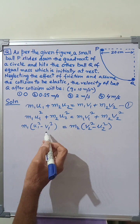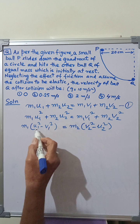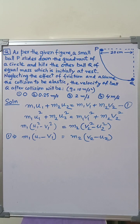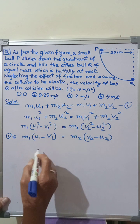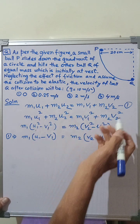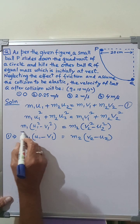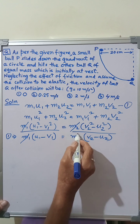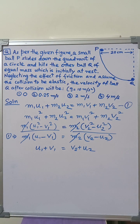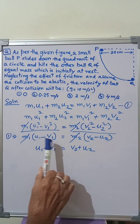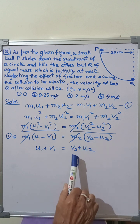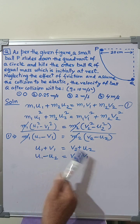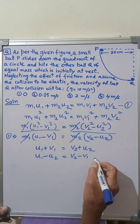From the kinetic energy equation, we get M1·(U1² − V1²) = M2·(V2² − U2²). Rearranging equation 1, we get M1·(U1 − V1) = M2·(V2 − U2). Dividing these equations, M1 and M2 cancel on each side, giving U1 + V1 = V2 + U2. Rearranging, we get U1 − U2 = V2 − V1. We mark this as equation 2.